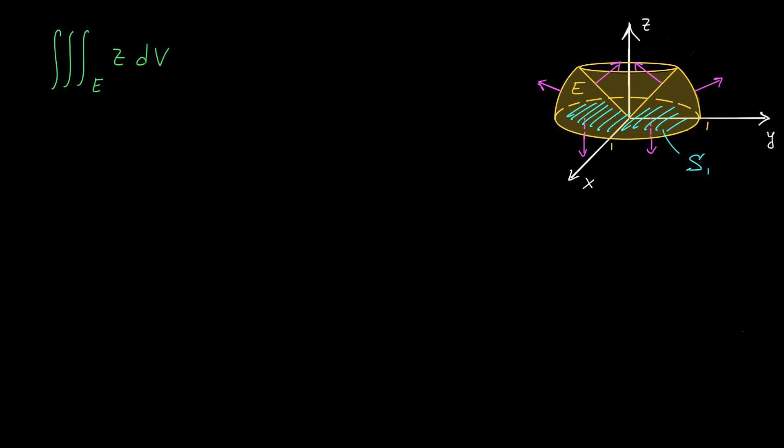We have to compute the triple integral of z throughout this solid region E. It looks like this region will be most easily expressed in terms of spherical coordinates. Our θ value would go all the way around from 0 to 2π. Our φ value is going to go from this angle here, which I think we said was π over 4, all the way to this angle here, which will be π over 2.